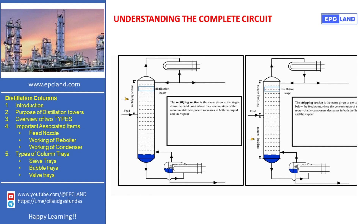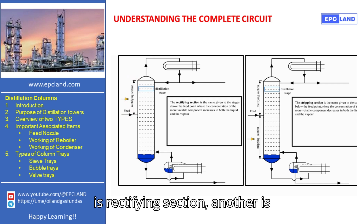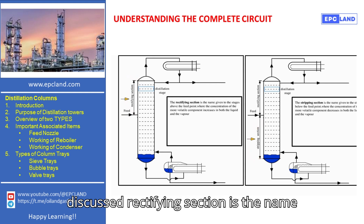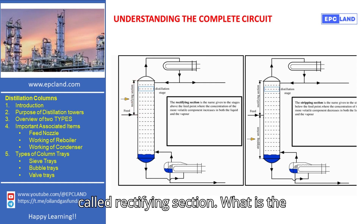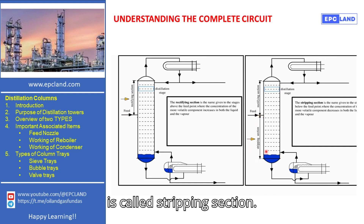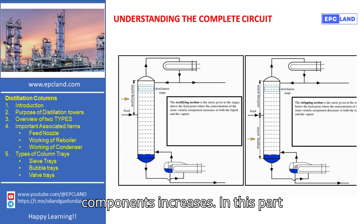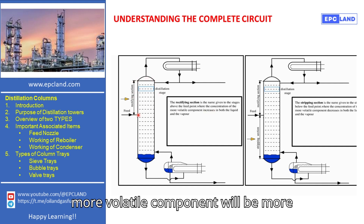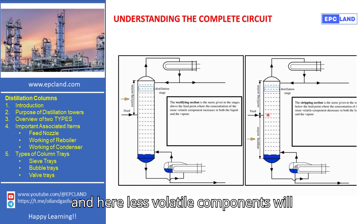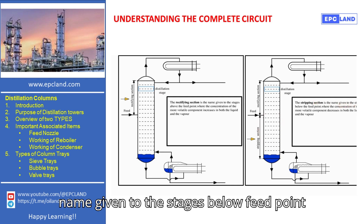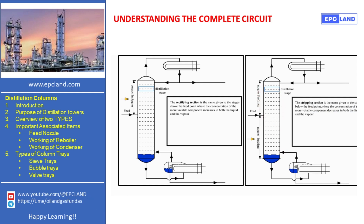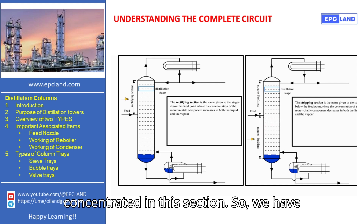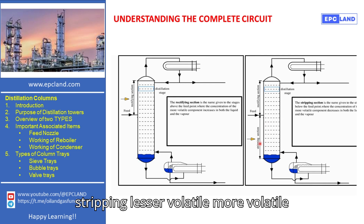There are two sections: rectifying section and stripping section. The rectifying section is the name given to the stages above the feed point. Whatever portion of the column is above this point is called the rectifying section, and whatever is below this point is called the stripping section. In the rectifying section, the concentration of more volatile components increases. In the stripping section, the concentration of more volatile components decreases and less volatile components are concentrated.